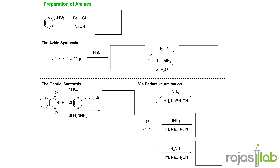Let's say you need to prepare amines. Each of these reactions you can consider a tool to keep in your toolbox. For example, you can hydrogenate a nitro group on a benzene to make an aniline derivative. To make primary amines, we only know three different ways to do that. You can take sodium azide and then reduce it using H2 and platinum, or lithium aluminum hydride, to turn your alkyl azide into an alkyl amine.